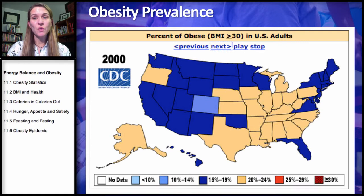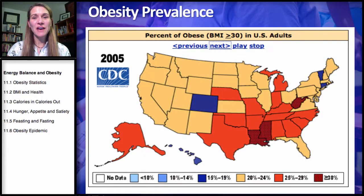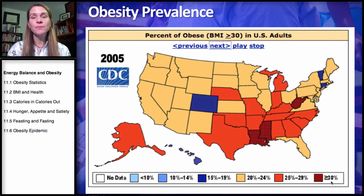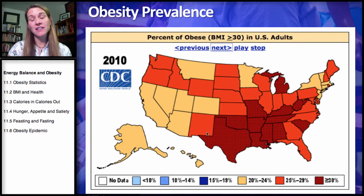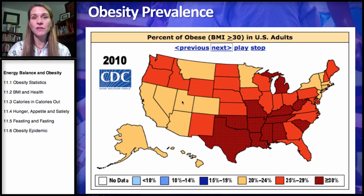Now starting to get over 20% in those same states, with western states catching up. Notice that Colorado sits around 10% to 14%. By 2005, we're not seeing any blue — hardly any states have less than 20% obesity. Some southern states are now over 30% obese. The most recent data goes up to 2010, showing obesity rates greater than 30% in those southern states.